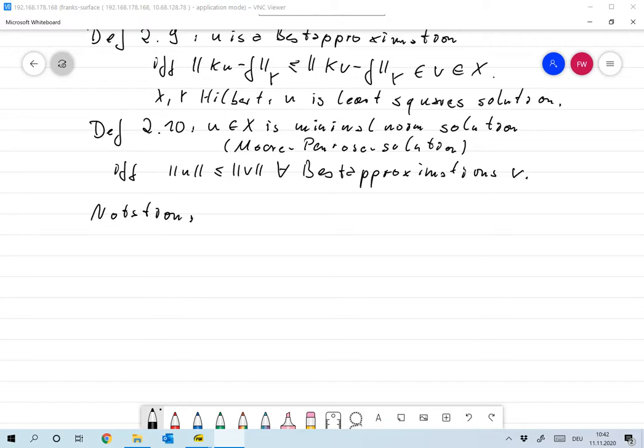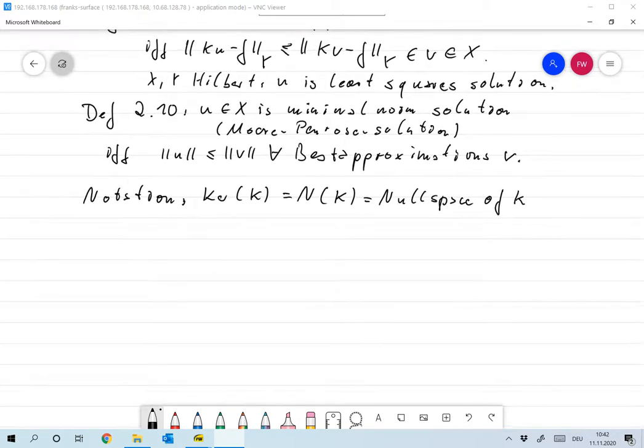The kernel of K, which I sometimes also write as the null space of K, is defined as all elements u in X that map to zero.